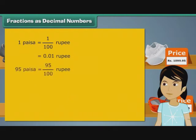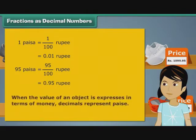Therefore, 95 paise form 95 by 100th of a rupee. We can express 95 paise as 0.95 rupee. Therefore, the decimals in the footwear stood for paise. When the value of an object is expressed in terms of money, the decimal represents paise.